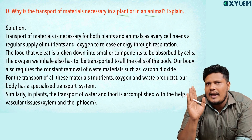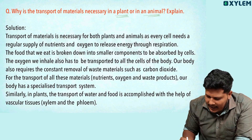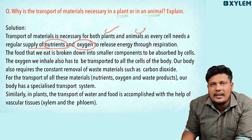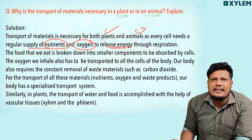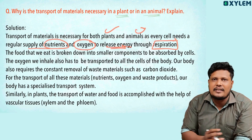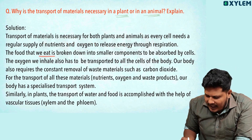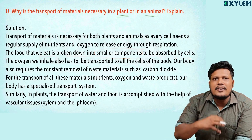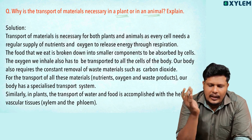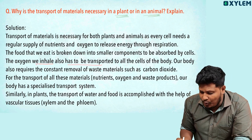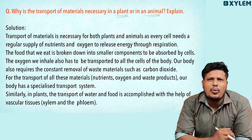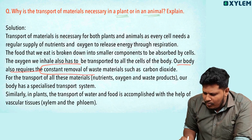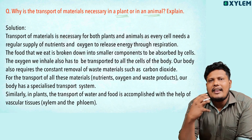In the case of animals, we have blood. A regular supply of nutrients and oxygen is needed in the case of plants and animals for the purpose of releasing energy. That process is called respiration. The food we eat is broken down into smaller components through digestion, and after that, the digested food materials are absorbed by the cell. The oxygen we inhale also has to be transported to all the cells of the body.